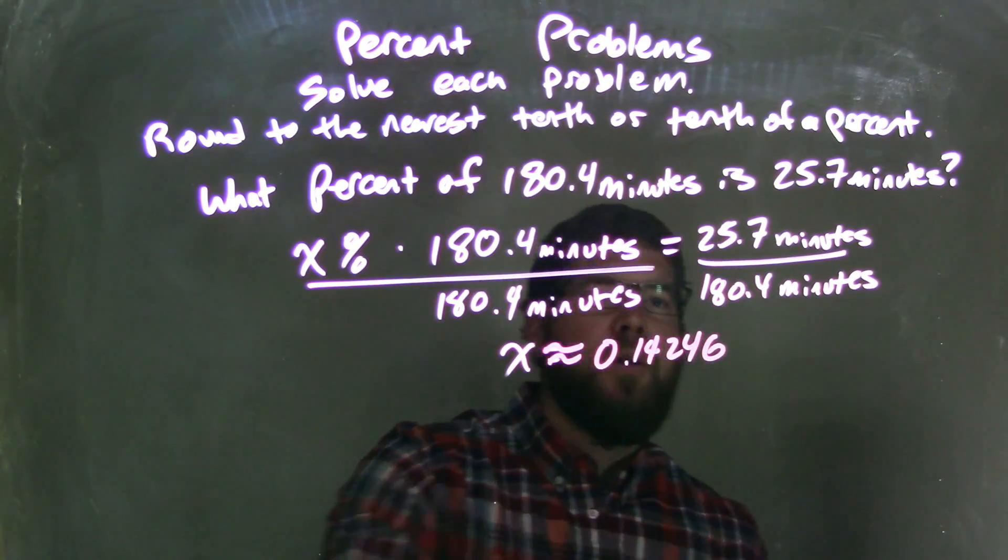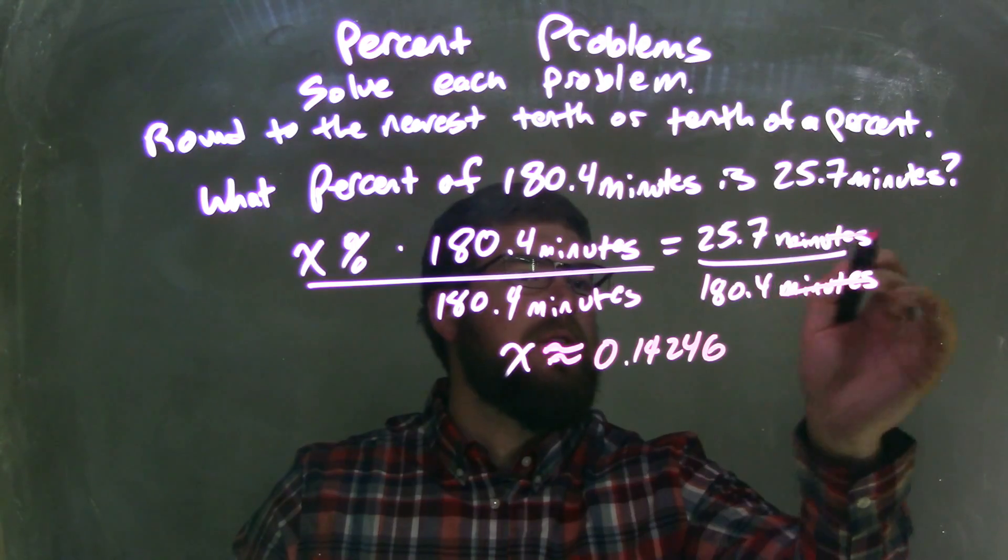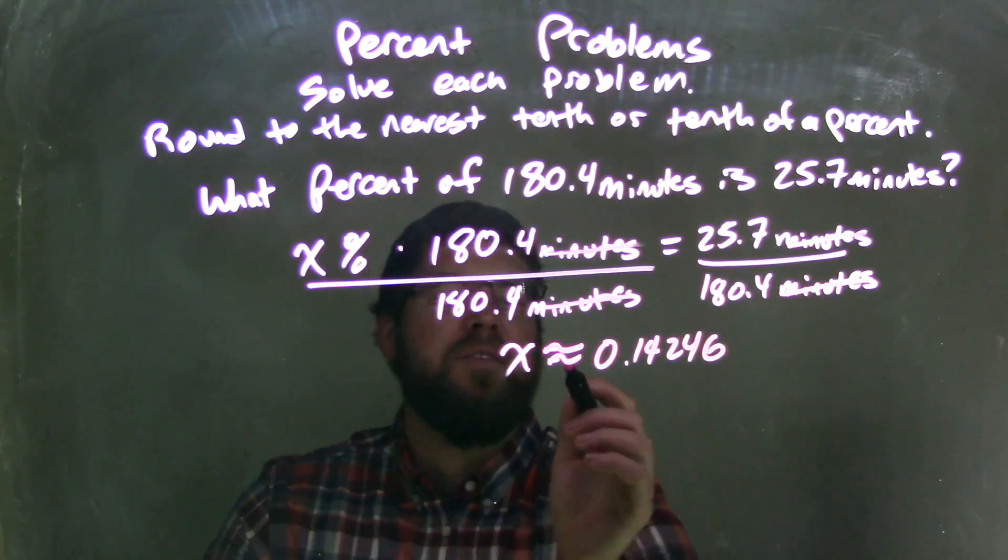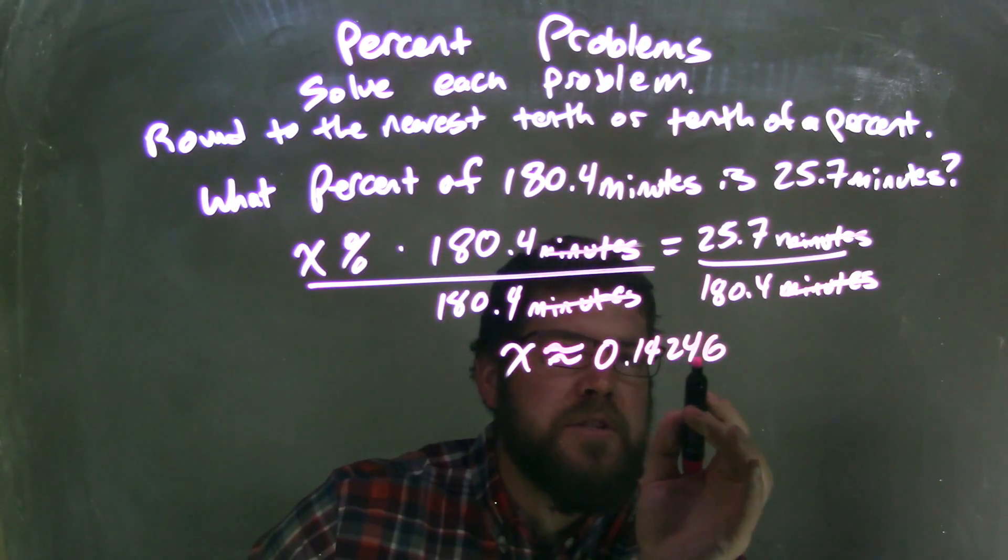Now notice I can eliminate the units minutes. They cancel out there as well. And so we're left with x is approximately 0.14246.